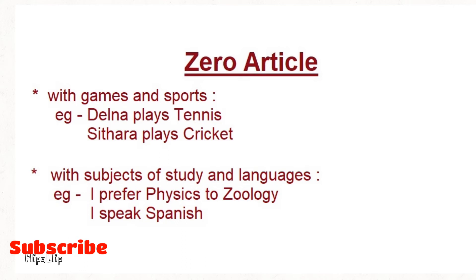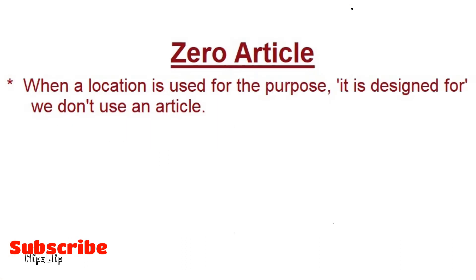The sixth rule is with subjects of study and languages. For example: 'I prefer physics to zoology' — not 'the zoology' or 'the physics'. Similarly, 'I speak English' or 'I speak Spanish' — we won't say 'I speak the English' or 'I speak the Spanish'. It is zero article with subjects and languages.